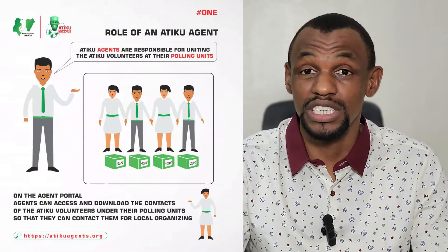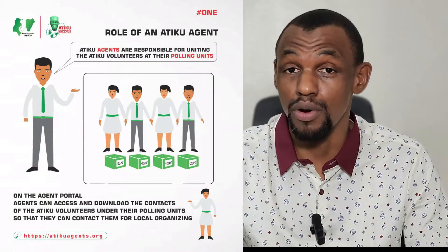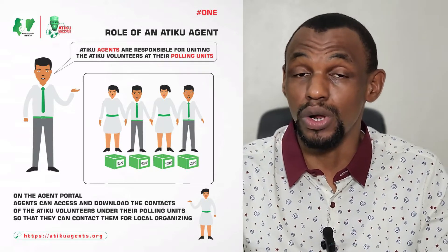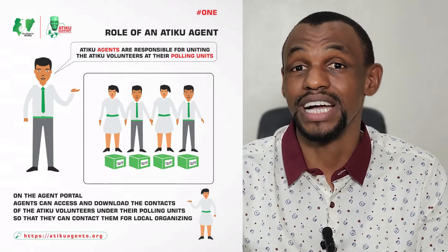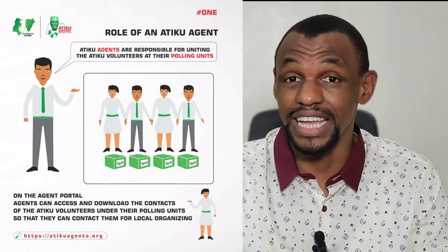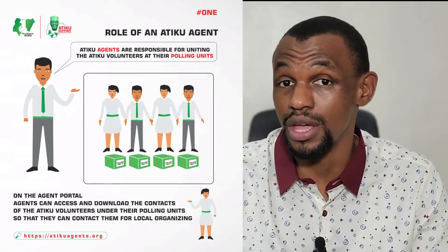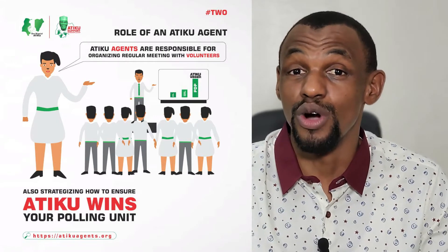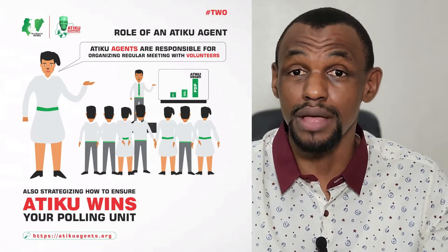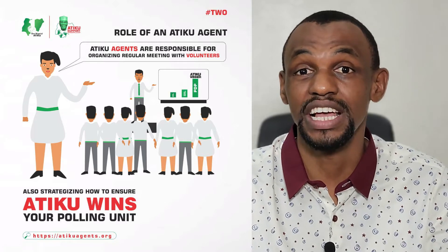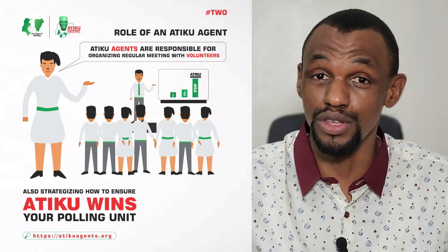The Atiku agents are responsible for uniting the volunteers at their polling units. On the agent portal, agents can access and download the contacts of the Atiku volunteers under their polling units so that they can contact them for local organizing. As an agent, you are responsible for organizing regular meetings with your volunteers and strategizing how to ensure Atiku wins your polling unit.